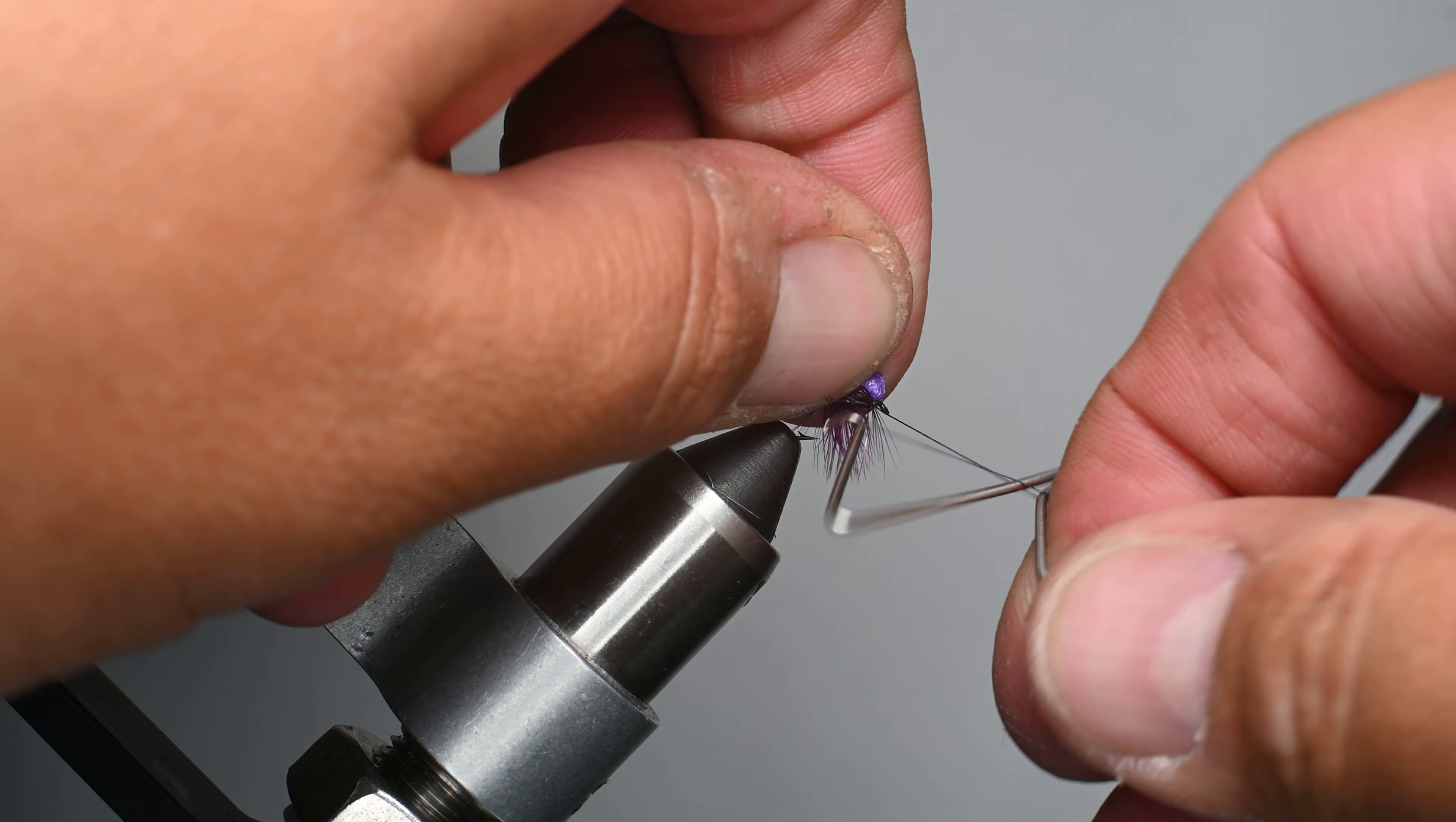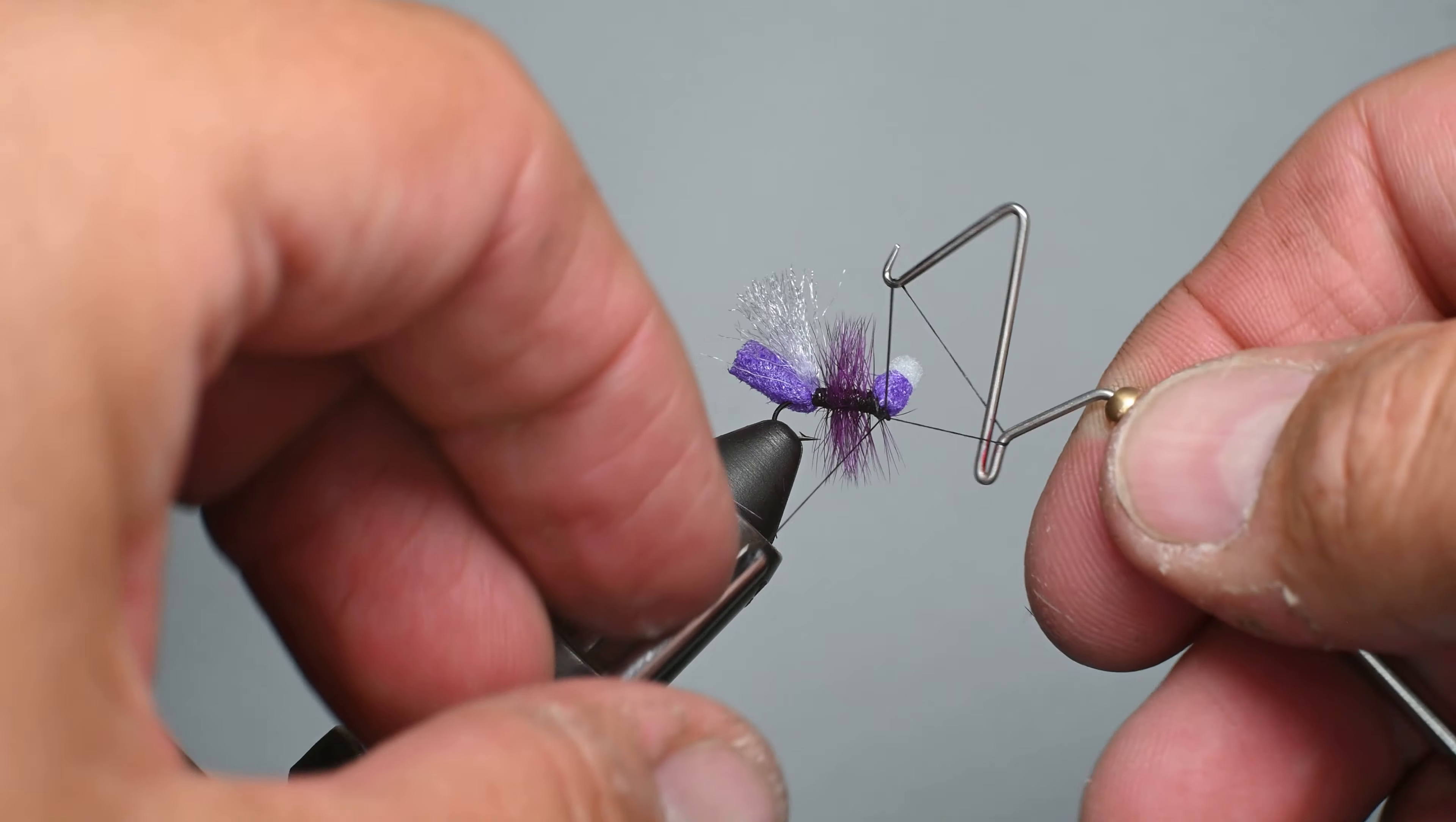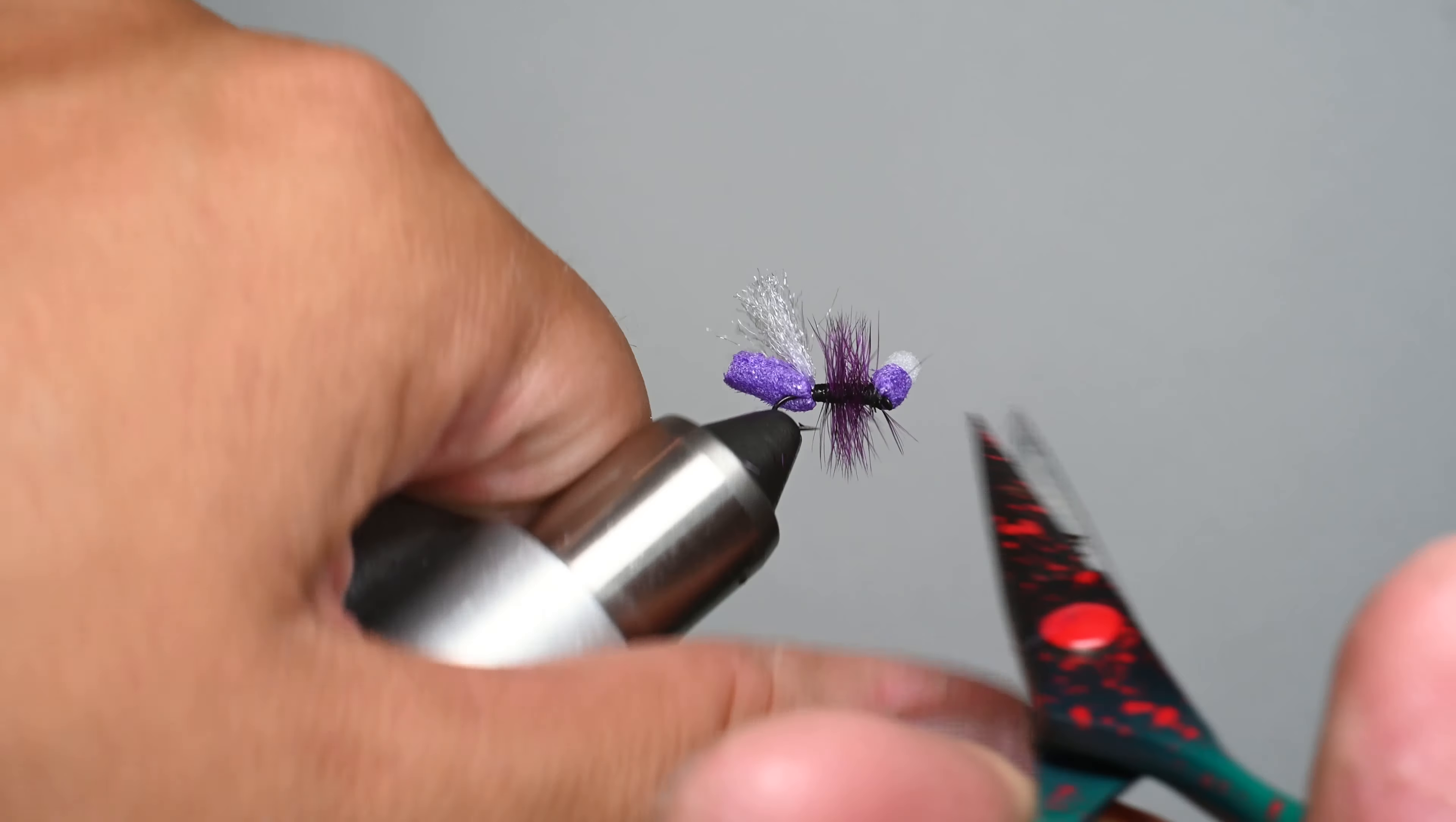We'll do a three turn whip finish right here behind the eye, kind of help that foam pop up, and then I'll do a second one here just around that foam to do a double whip finish so I'm not applying more cement or more weight to this than I need to. We'll just go ahead and trim that tag end out once we get it secure.